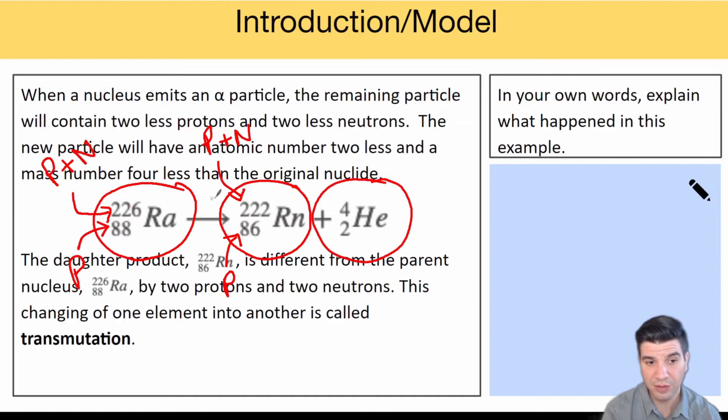If you do a little bit of math, 226 minus 222 means the mass dropped by 4. You'll also notice that if that's 88 and we're going down to 86, the number of protons dropped by 2, which makes up for the missing mass. That would be the helium-4. It has a mass of 4 and two protons. The process of changing from one element into another is known as transmutation.